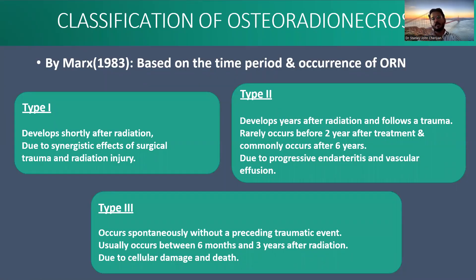Coming to the classification, classification was given by Marx based on the period and occurrence of the process. He described three types. Type 1 develops shortly after radiation due to synergistic effects of surgical trauma and radiation. Type 2 occurs rarely before two years and is usually seen after six years, due to progressive endarteritis and vascular occlusion. Type 3 occurs between six months and three years of radiation due to cellular damage.